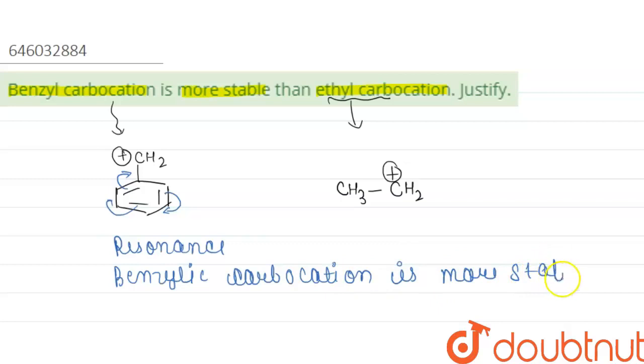benzylic carbocation is more stable. But if you look at ethyl carbocation, the only effect is the +I effect or +H effect, and due to +H effect the system is stabilized or your carbocation is stabilized. And as we know, the resonance